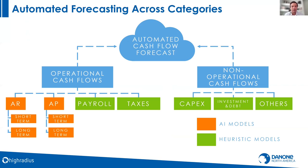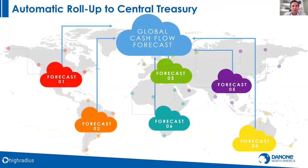For other cash flow categories that aren't as complex, we don't always need a powerful AI model. For example, payroll happens every two weeks — you can use a weighted average of last year with a growth factor. Our data science team goes through deep analysis on the data and selects the right model for the right category. We forecast at the lowest level — business unit or company code — so it becomes easy to roll up to a global cash forecast. As Danone adds new business units, we add forecasts at that level, and rolling up to country or region level is straightforward.